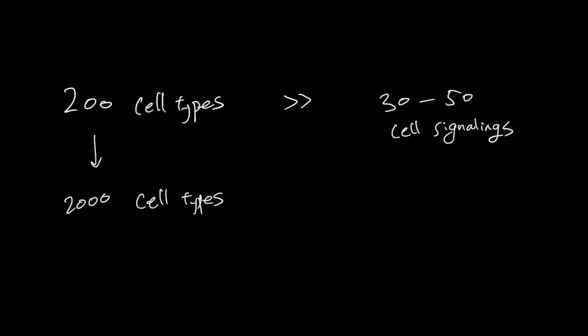So if you take a step back and think about it, the number of cell signalings is much less than the number of cells. This is nice because if you understand these cell signalings, then you can understand cells that make up a human body.